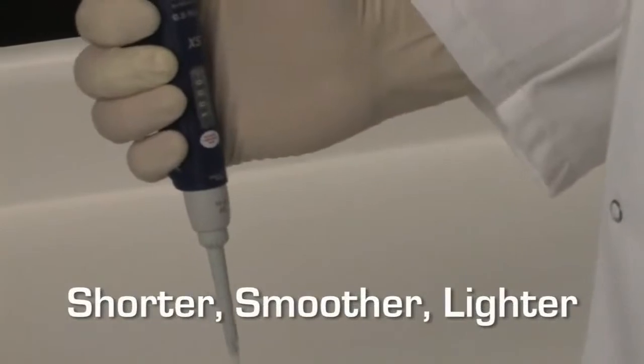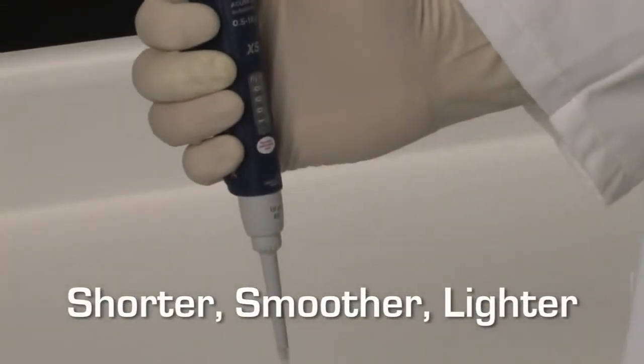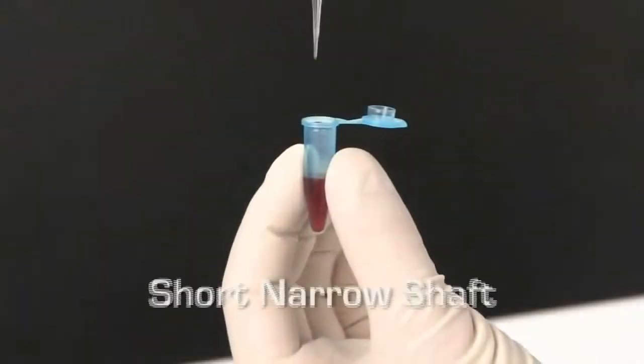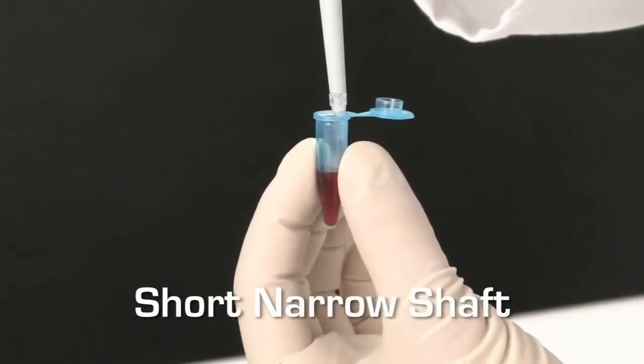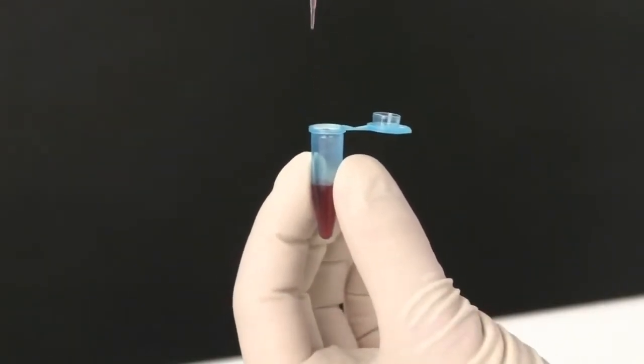The 826XS is shorter, smoother, and lighter. The short, narrow shaft enables dispensing into the tighter opening of smaller microtubes without contaminating the procedure.